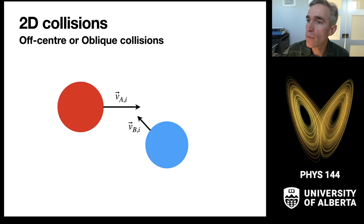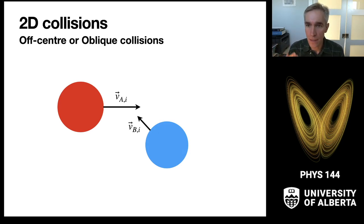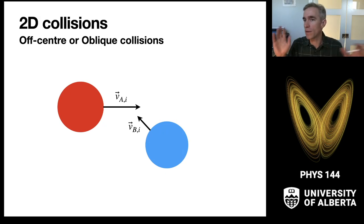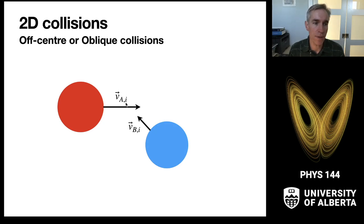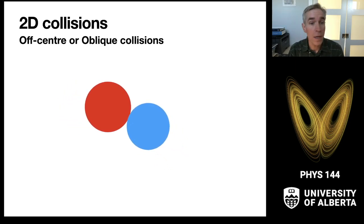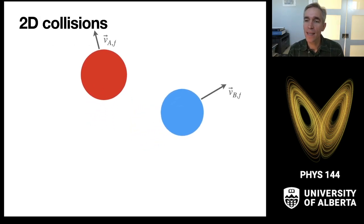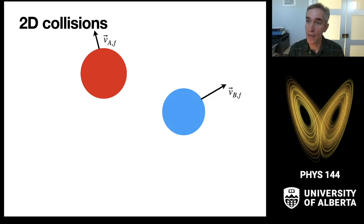To get started, we want to think about off-center or oblique collisions. We've dealt with one-dimensional collisions in the past. We want to consider now the general case of two objects colliding, and we'll use round objects since everything can be approximated as a round object with an appropriate radius of curvature. We'll imagine two objects coming in with initial velocities V_A and V_B, then colliding and coming out with final velocities for V_A and V_B. We'll use this as our general notation.